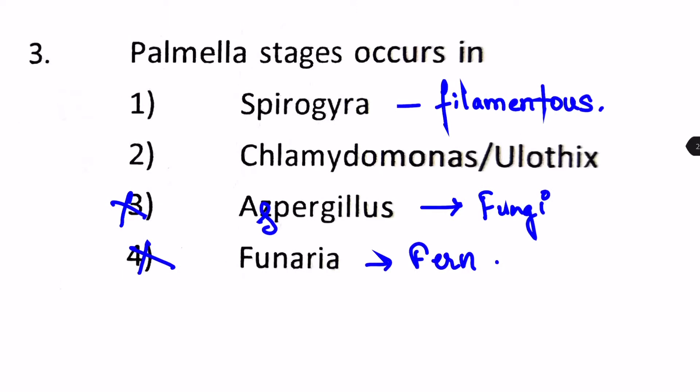But, I'm not sure about Ulothrix because Ulothrix is actually an unbranched filamentous fungi. And why they have given it with Palmella stage, I don't know. But Chlamydomonas is the right answer. So, I'm going to mark two here, the right answer.